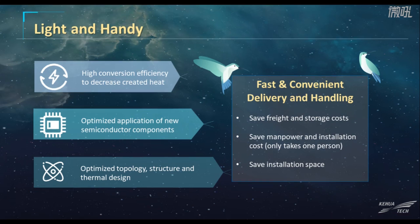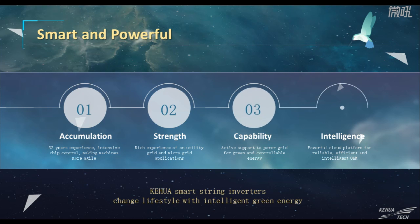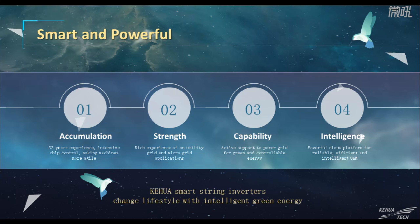The third similarity: smart and powerful. Based on 32 years of power electronic application experience, intensive chip control makes the inverter more agile to achieve stronger control capability. Since Keihua has the leading solution for utility-scale solar farms and microgrid energy storage, the R&D team has rich experience in utility grid and microgrid applications. This makes the Keihua string inverter perform well in active and reactive power response to grid voltage and frequency, as well as aspect power control, harmonic control, and more. The inverter has powerful functions for active support to the power grid, making renewable energy truly controllable and green.